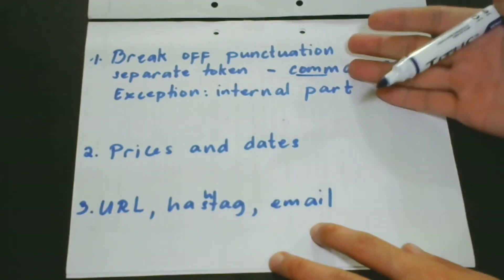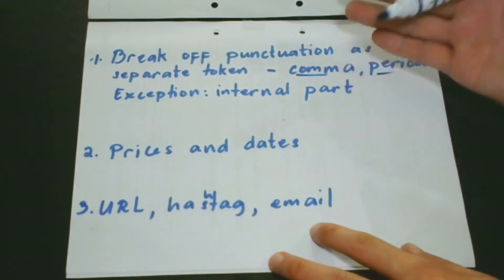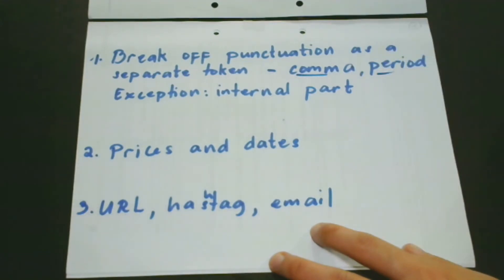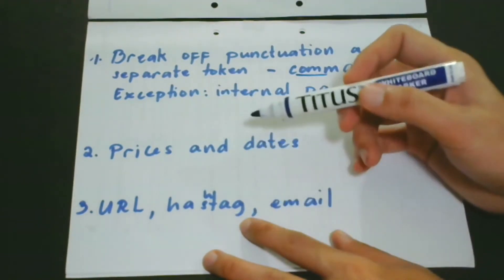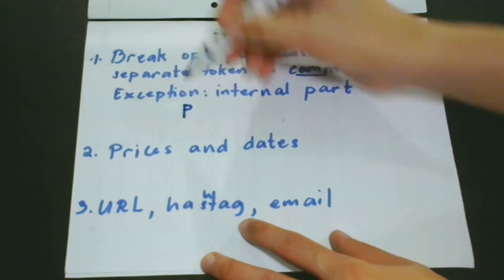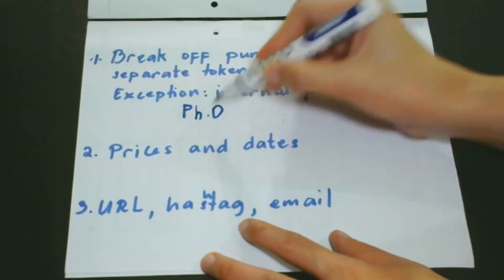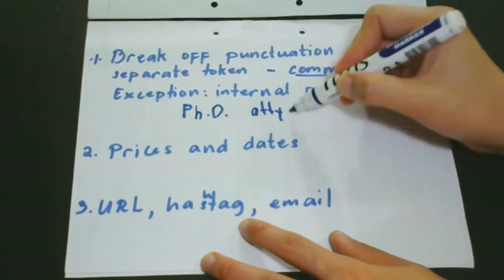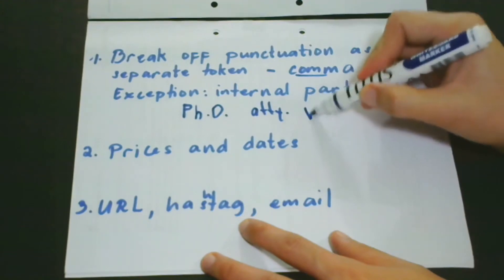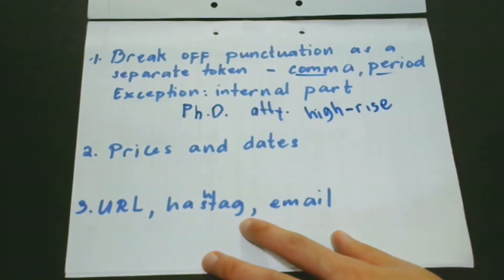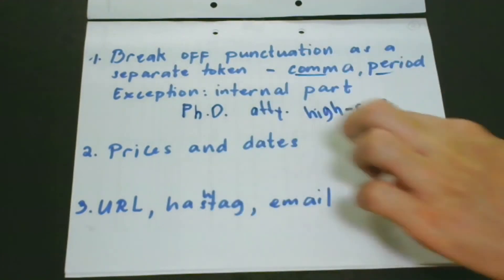However, this rule is not absolute — there are exceptions. For example, consider 'PhD,' 'ATTY' (short for attorney), and 'high-rise' (a compound word with a hyphen). These three words contain periods and a hyphen, which are punctuation marks.